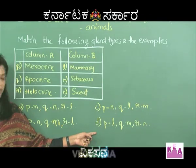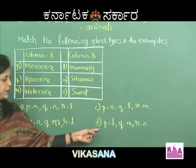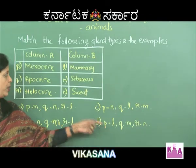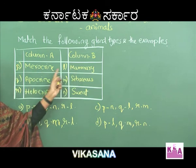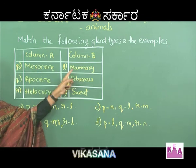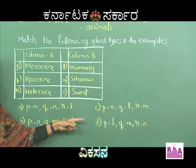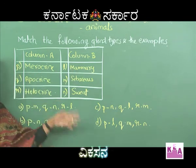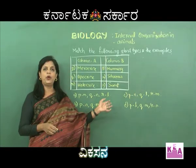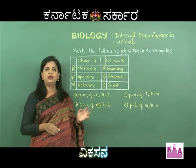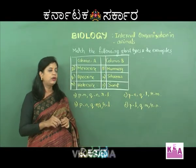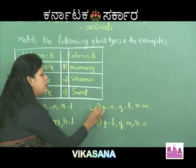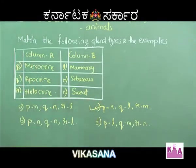Option D says P to L - merocrine to mammary gland - that is wrong. So among all four options, the correctly matched columns are under option C. C is the right answer.